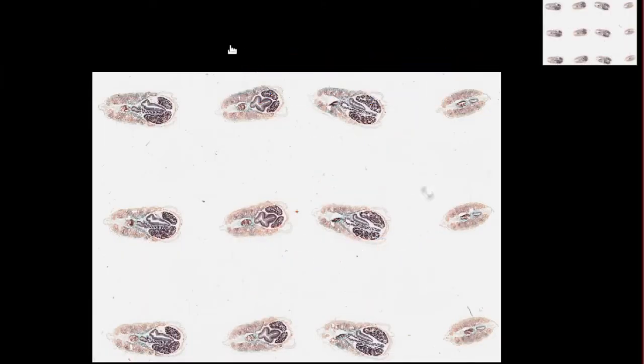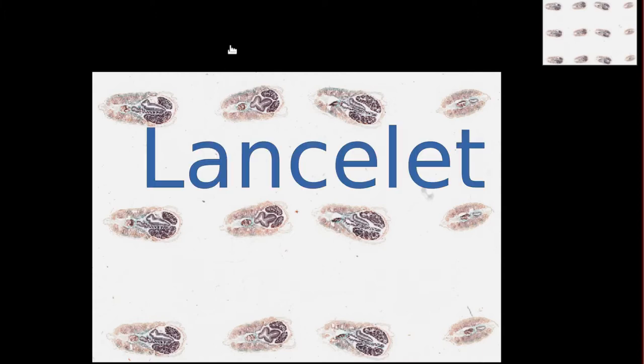Hello and welcome to Down the Scope. Today we're going to be looking at a slide showing serial transverse sections of a lancelet, also known as amphioxus or reasonably classified as a branchiostoma.